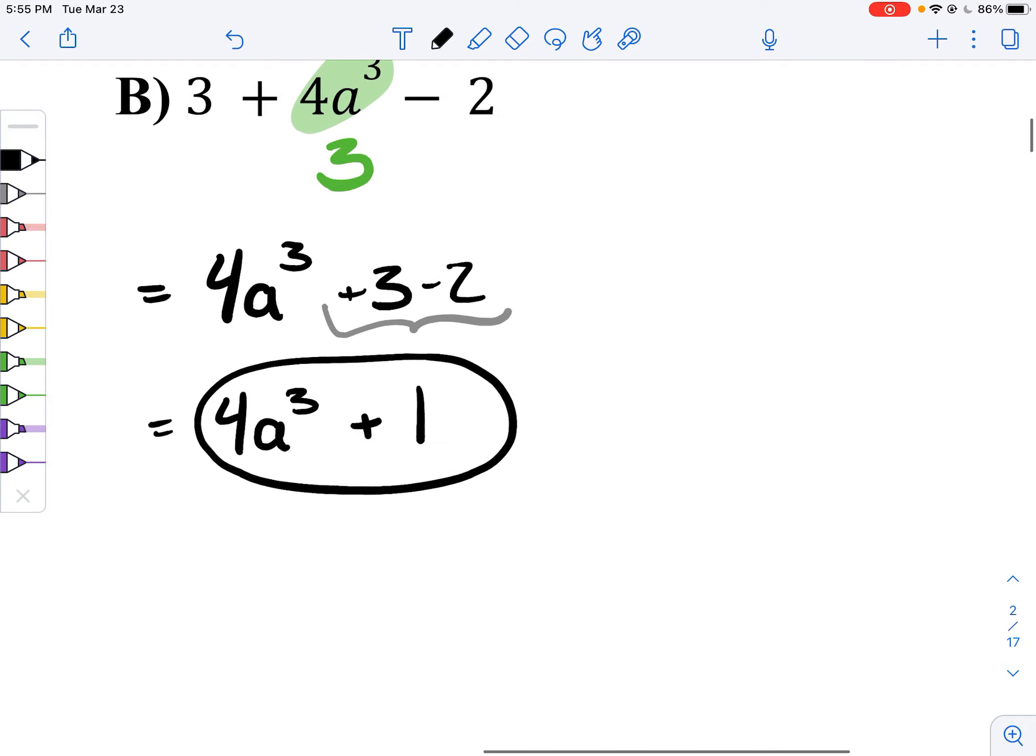And this guy, since he's got a degree of three, he is a cubic, and he only has two terms. One, two. So, he is a cubic binomial.